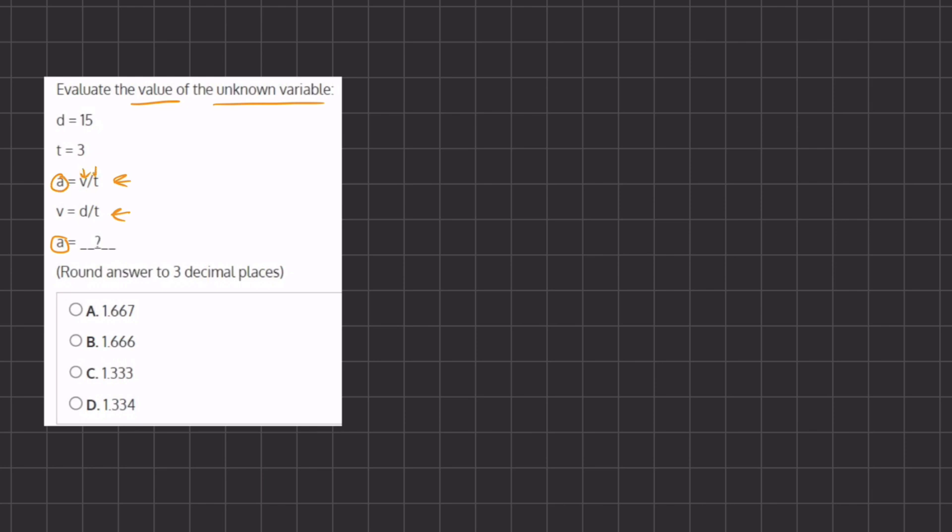We don't have the value of v because we still need to solve for it, so we're going to use this expression to plug in the values that we know. We have v equals d, which is 15, divided by t, which is 3. So v is going to equal 5, because that is 15 divided by 3.